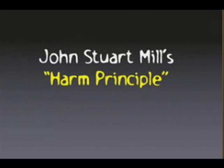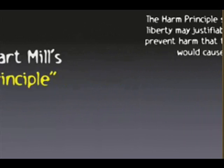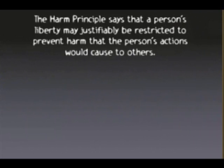In addition to formulating the modern version of utilitarianism, John Stuart Mill also developed what he called the harm principle. The harm principle says that a person's liberty may be justifiably restricted to prevent harm that person's actions might cause to other people.